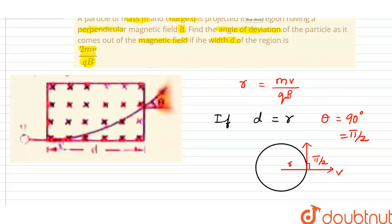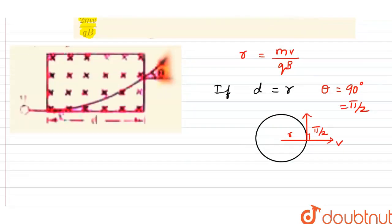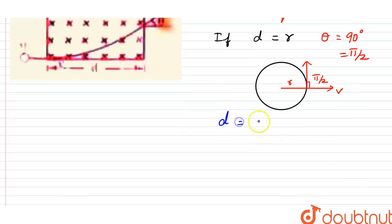Now in our question, they have given that width is equal to 2MB by QB. This is equal to 2 times the radius.